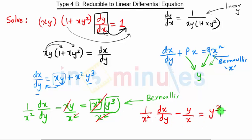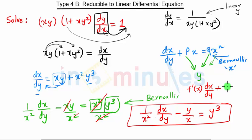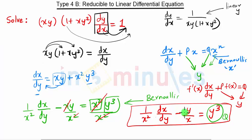We get this equation and we know it is of the form f'(x)·(dx/dy) + f(x)·P = Q, where P and Q are functions of y. Here f'(x) corresponds to 1/x², this is our new Q, this is our new P, and 1/x is f(x).